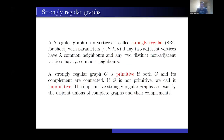Let me start with some definitions. A k-regular graph on the vertices is called strongly regular with parameters v, k, lambda, mu, if any two adjacent vertices have lambda common neighbors and any two distinct non-adjacent vertices have mu common neighbors. A strongly regular graph g is primitive if both g and its complement are connected. If g is not primitive, we call it imprimitive, and the examples of all imprimitive strongly regular graphs are disjoint unions of complete graphs and their complements.